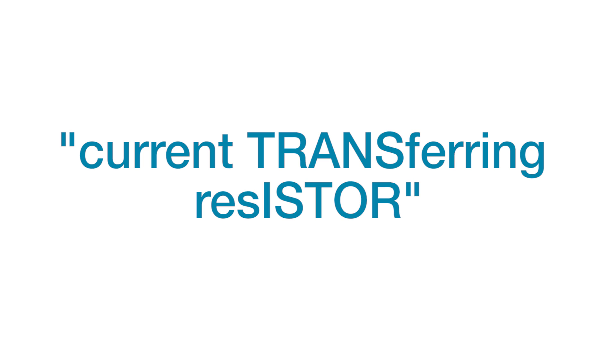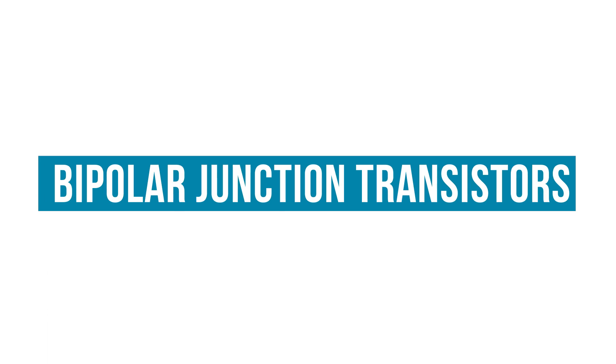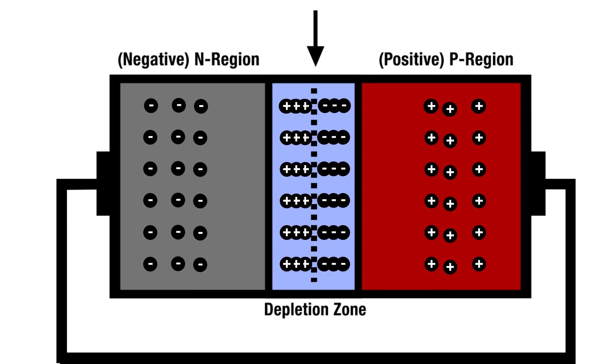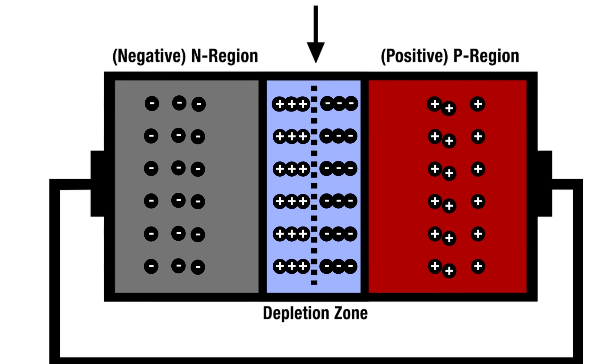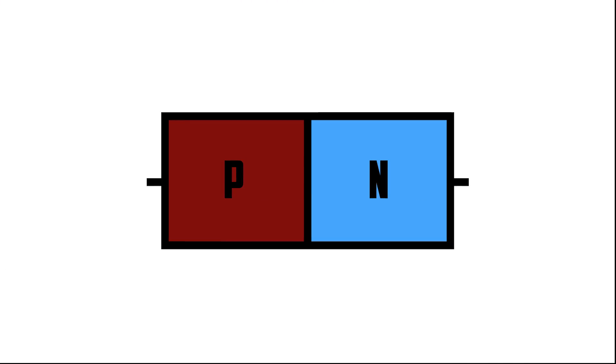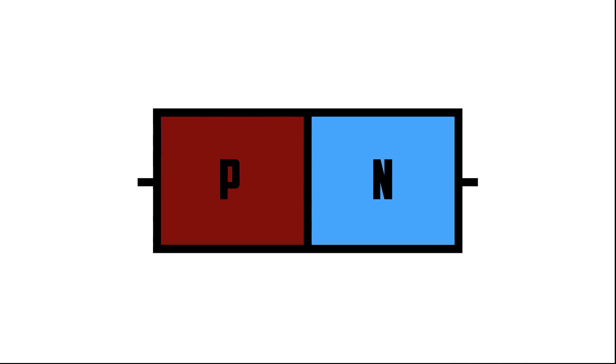The term transistor comes from current transferring resistor. The basic type of transistors are bipolar transistors. Previously, we've talked about how diodes work. Diodes have a PN junction. Bipolar junction transistors, or BJTs, are bipolar because they have two PN junctions. BJTs are essentially two diodes in a single package.